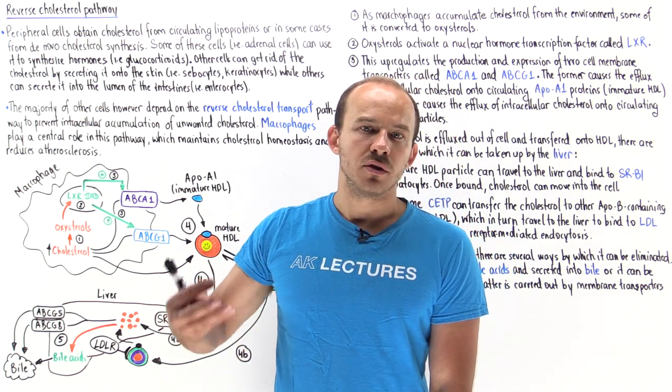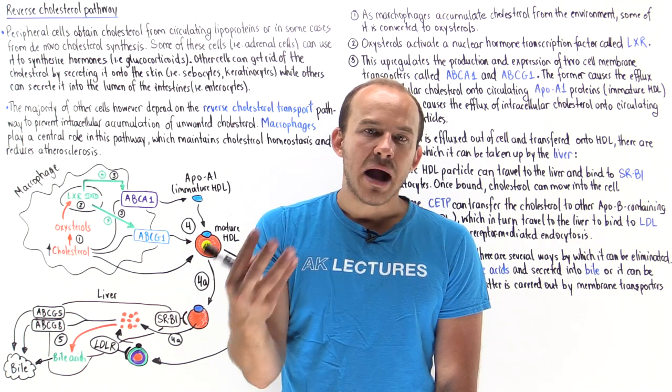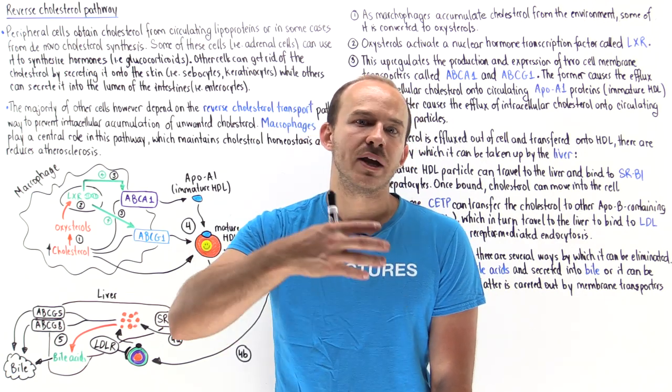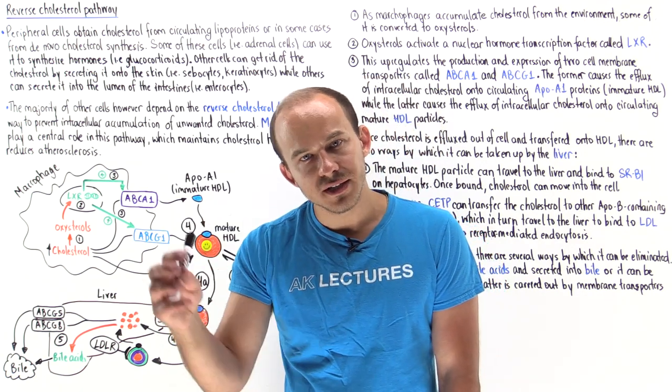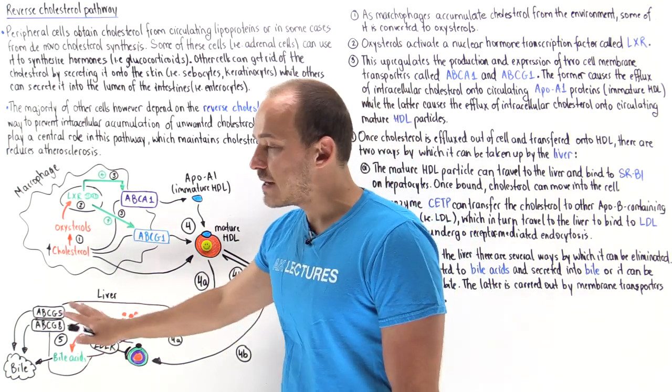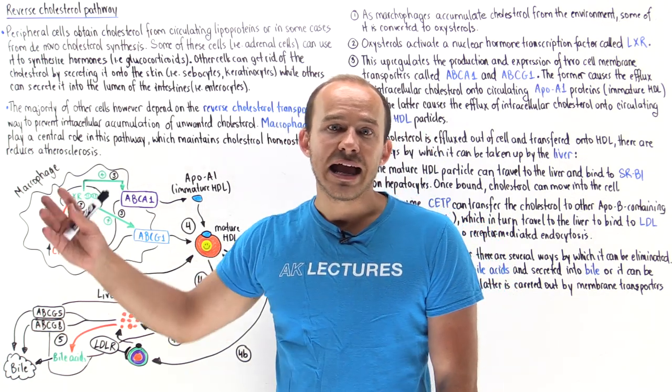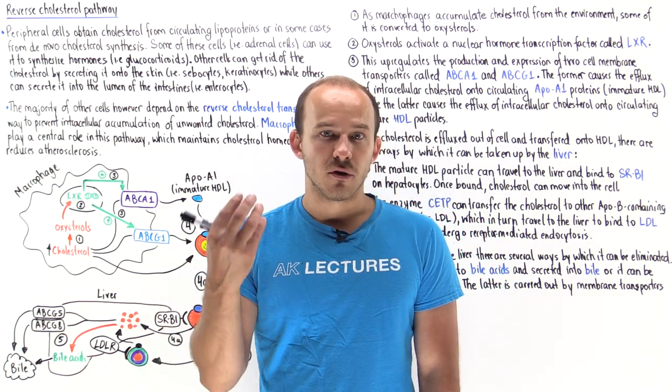Remember, bile is stored in the gallbladder and it's dumped into our intestines, where the bile helps emulsify fat and break down the fats into smaller components, and then those fats can be absorbed into the body. Some of that bile and cholesterol is absorbed back in the body, but some of it actually exits the body by forming feces.